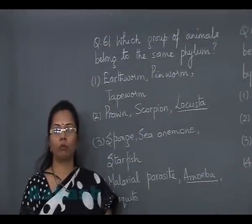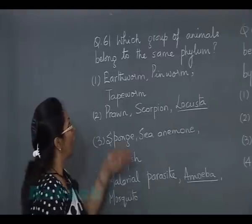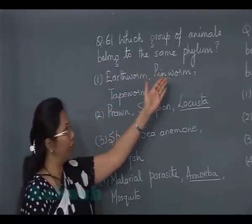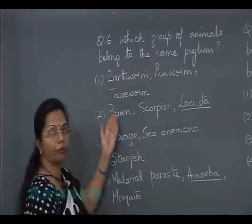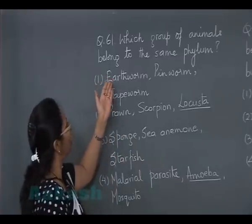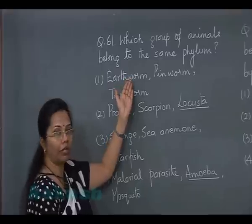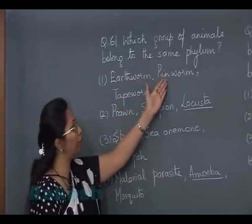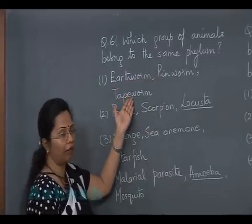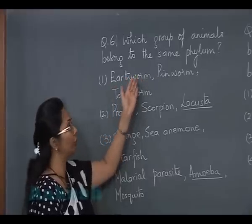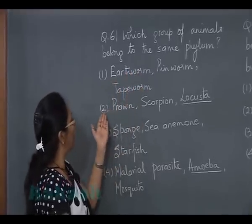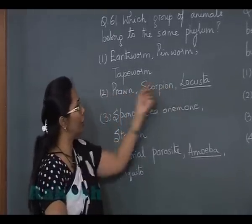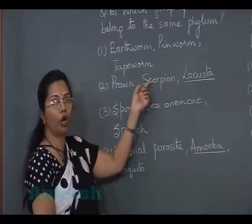Let's discuss question number 61: which group of animals belong to the same phylum? The first option — earthworm (Annelida), pinworm (Nematoda), and tapeworm (Platyhelminthes) — represents three different phyla, so this cannot be our answer. The second option — prawn, scorpion, and locust — all three belong to Arthropoda.